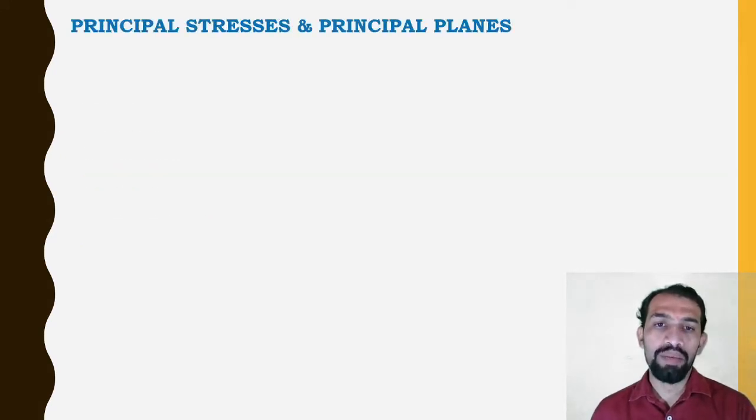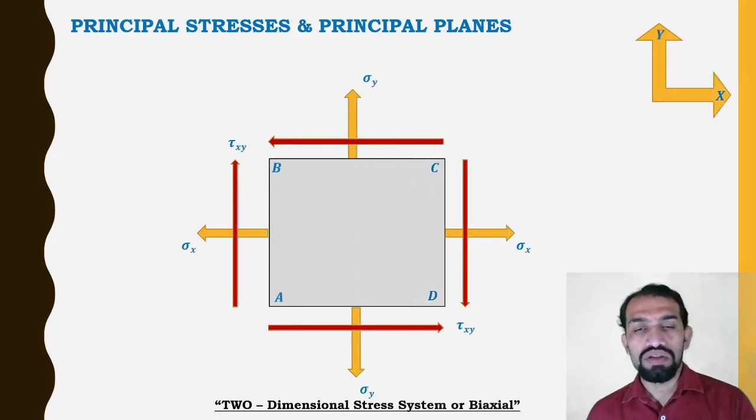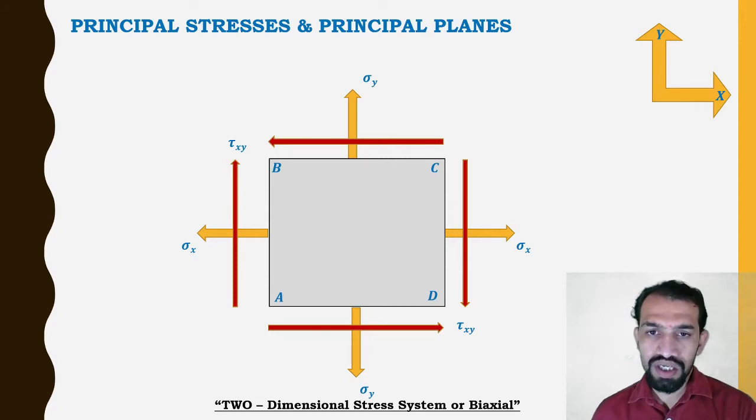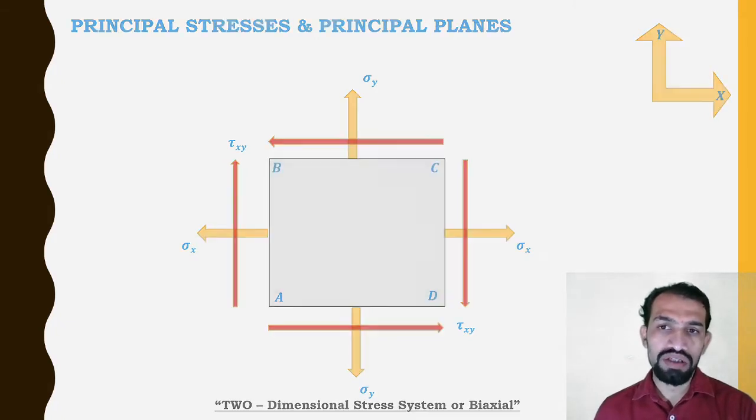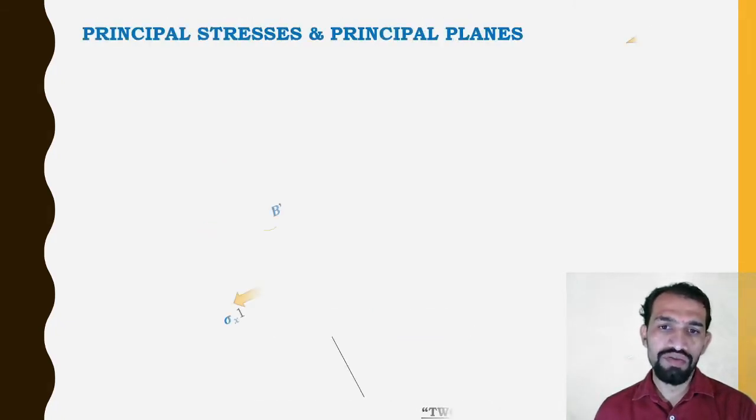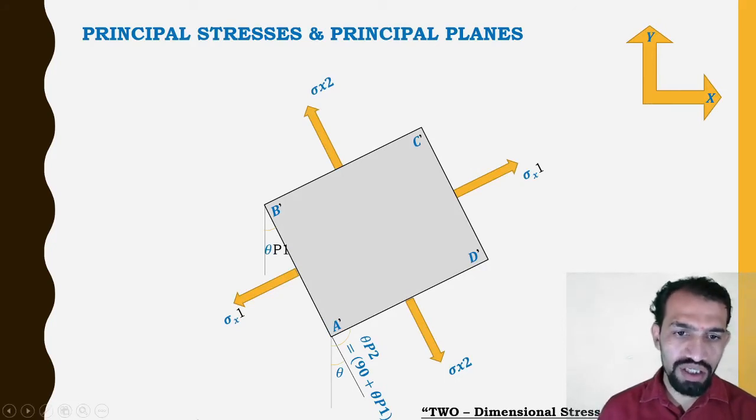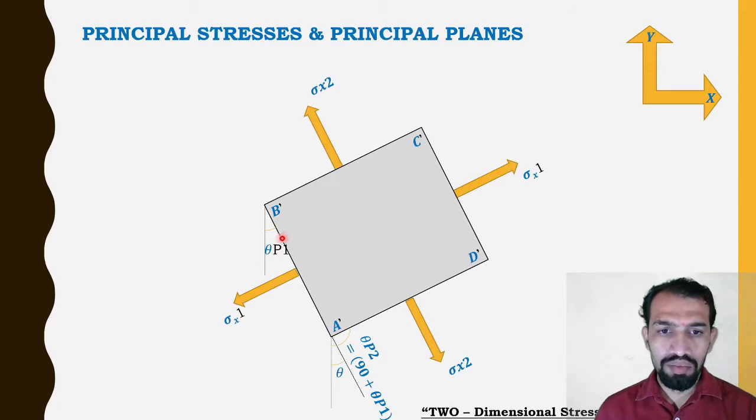So this is the two-dimensional stress system, where sigma x, sigma y, and tau xy are acting. ABCD is the particular section or element. When we take a tilting or go for an angle of this particular section, we see that theta 1 and theta 2 are the particular angles tilted.